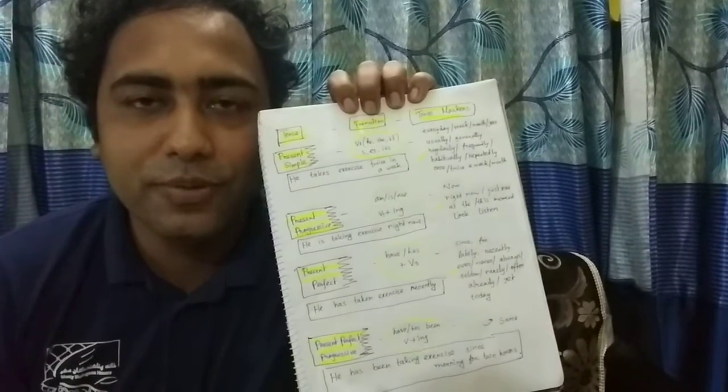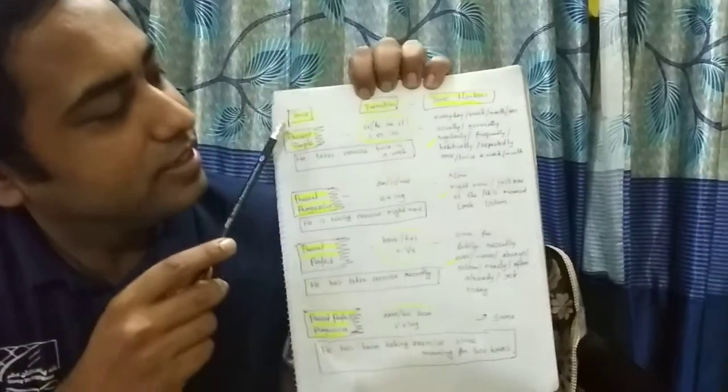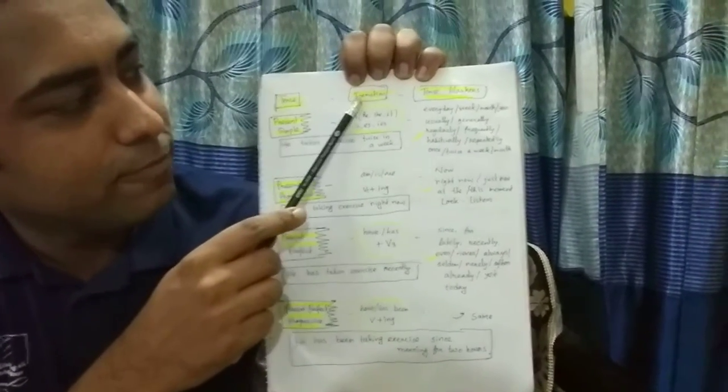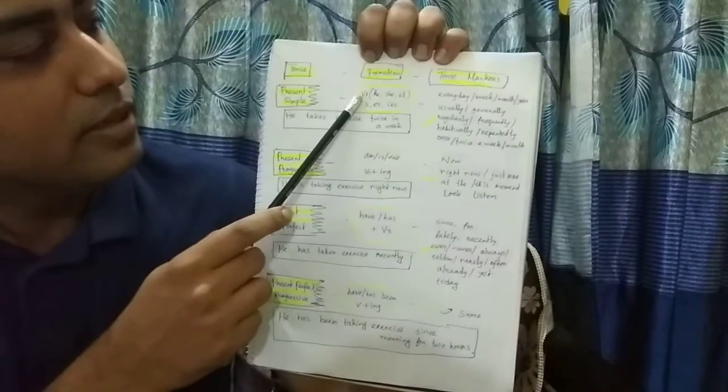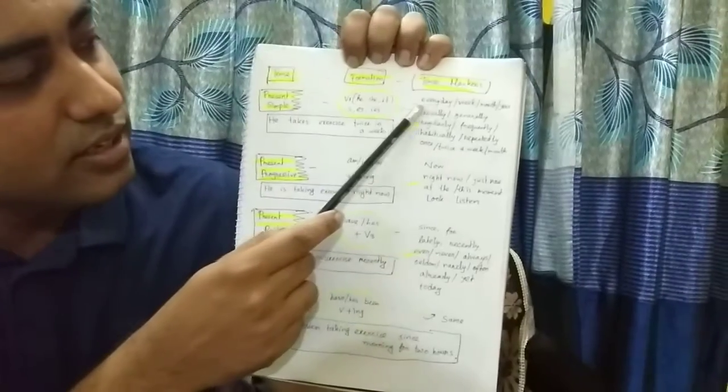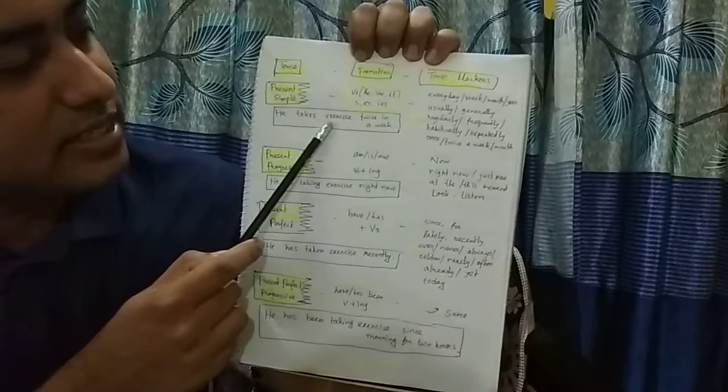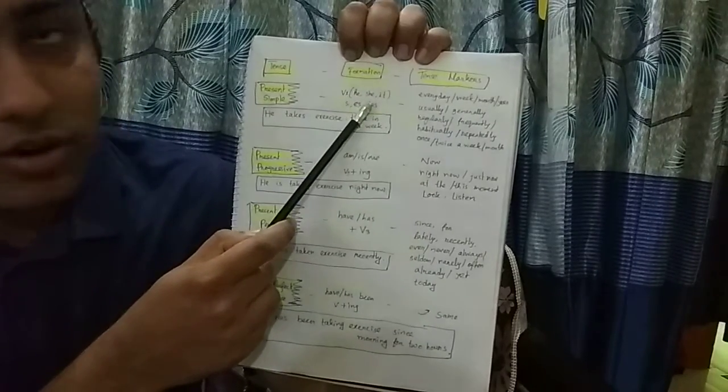Good morning everyone. Today I'm going to be talking about tense formation and tense markers. Present simple: verb one. For he, she, it, add s or es. The example is: he takes exercise twice in a week. When there is third person singular number, there will be s, es, or ies.